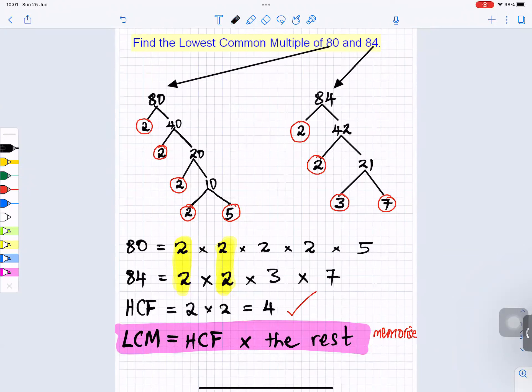How do we get the highest common factor? We found the highest common factor from above. What was the answer? Four. Now times the rest. What does the rest mean? The other numbers that we didn't use. We didn't use that two there, we didn't use that two, we didn't use this three, we didn't use this five, we didn't use this seven. So it will be times the two times the two times the three times the five times the seven.